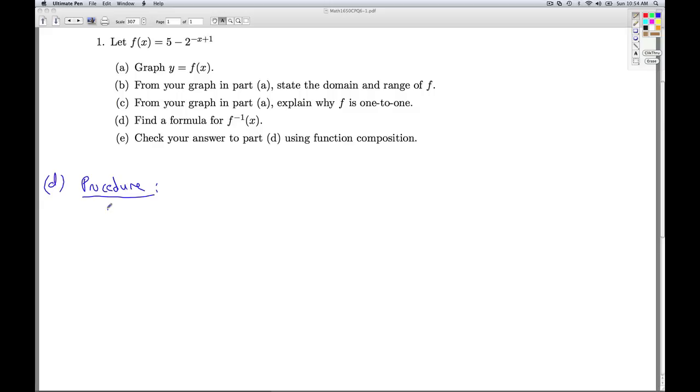So what's the procedure for the function f? What's it do? The first thing it does is it takes the input x, multiplies it by negative 1. Once it does that, it takes that result and adds one.